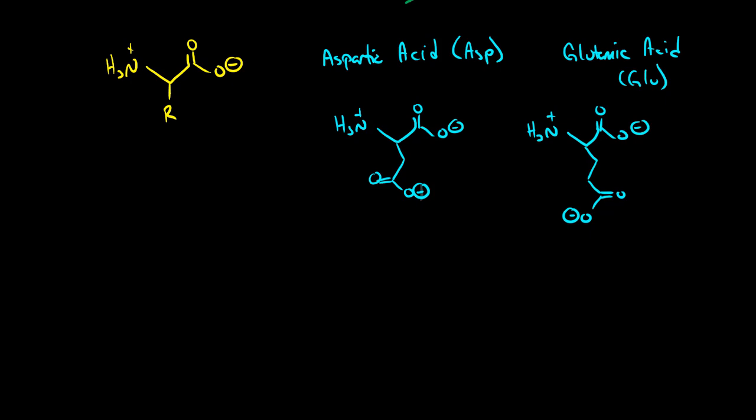So if you were to draw these protonated you would draw the carboxylic acids both of them being protonated. These are the two acidic amino acids. If you're ever asked to tell me an acidic amino acid tell me one of these two and draw them.